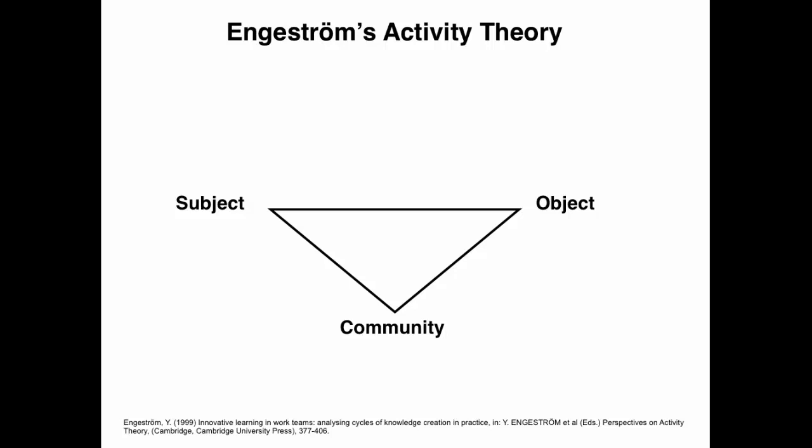When the subject interacts through the object, there are several mediating artifacts that interplay. Some of these artifacts are instruments that either pre-exist or are created. Some can be signs or languages and etc. All of these are necessary for the mediation to take place between the human and the object.